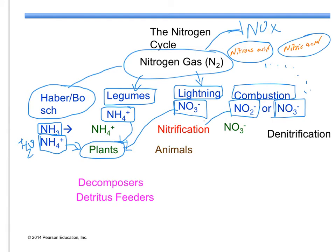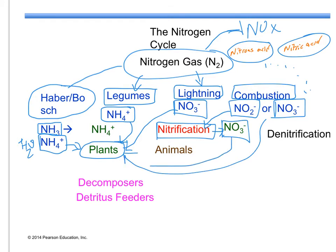Nitrites are not fully oxidized, so they must go through bacterial action called nitrification, and when it goes through nitrification, it becomes a nitrate. Nitrates, on the other hand, have the ability to be absorbed directly by plants. Once the nitrate is formed through nitrification from the nitrite, it can be absorbed directly by plants.